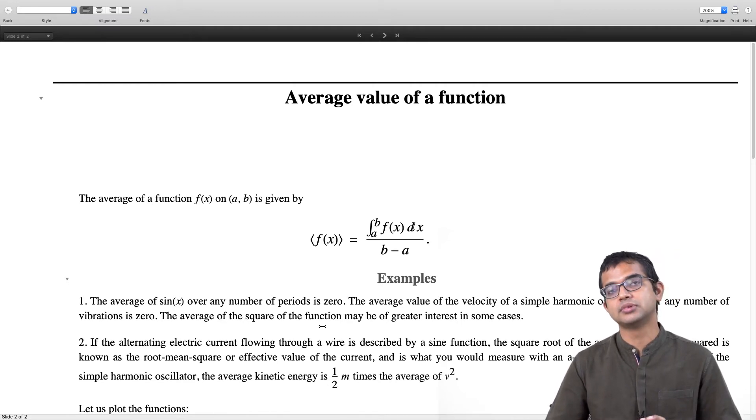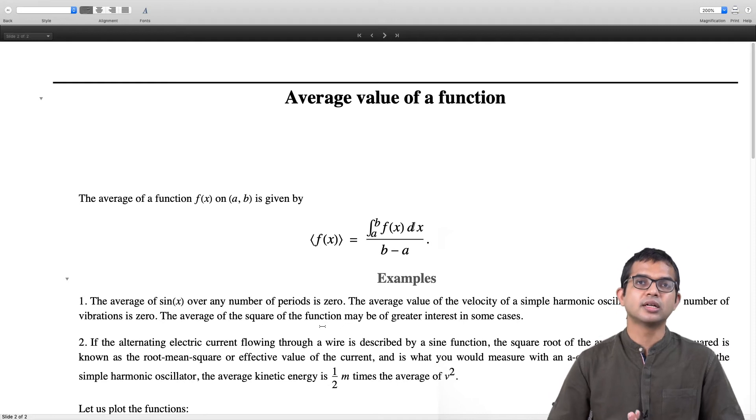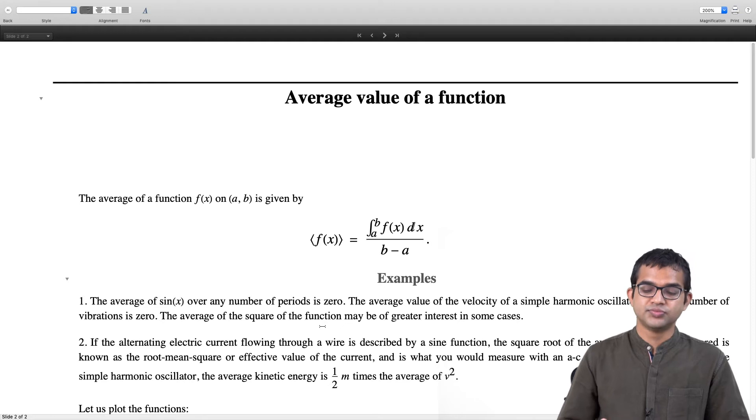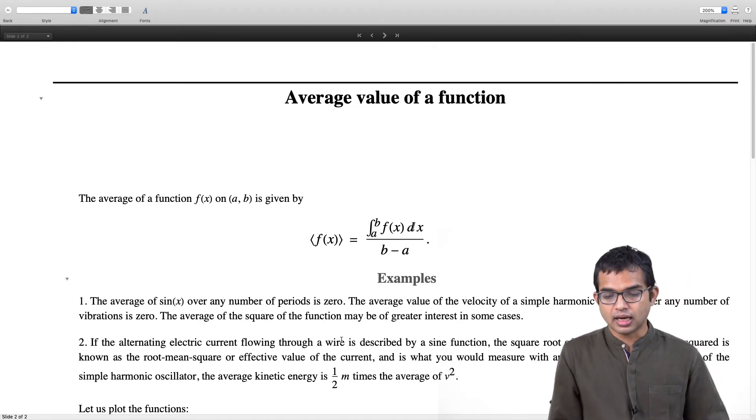That would be given by half m times the average of v². When you are looking at the kinetic theory of gases, you have lots of particles and there too the average of v² is of great importance. You might have seen these kinds of concepts in the equipartition theorem in statistical mechanics—these kinds of averages are of importance. Sometimes one is interested in the time average, sometimes in some ensemble average, and so on. All kinds of averages are of interest.